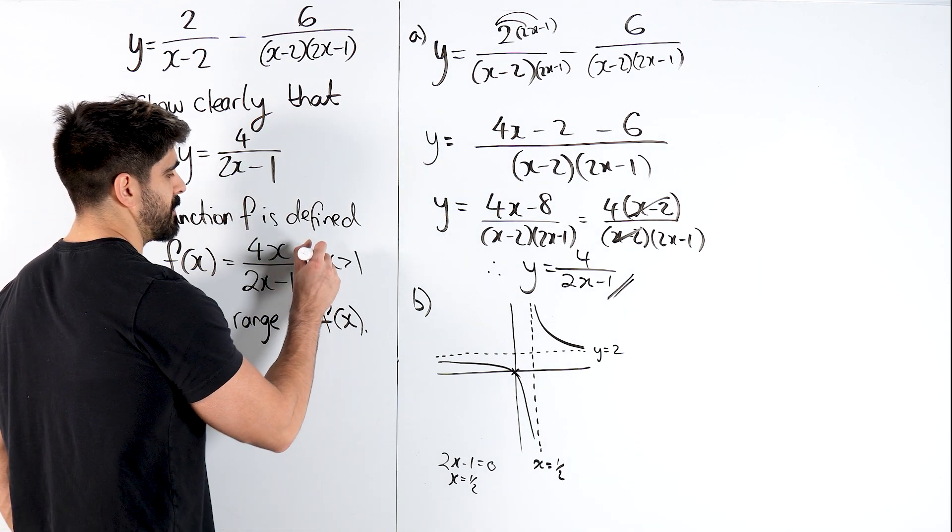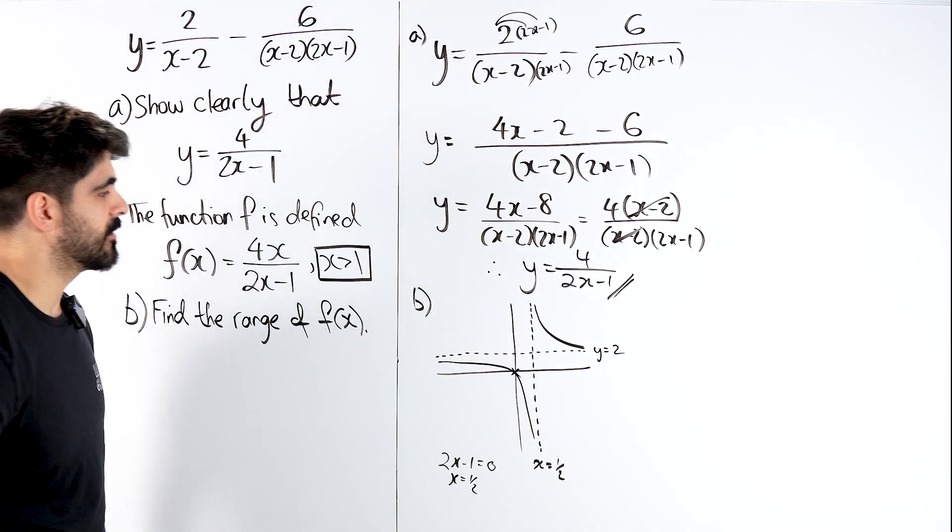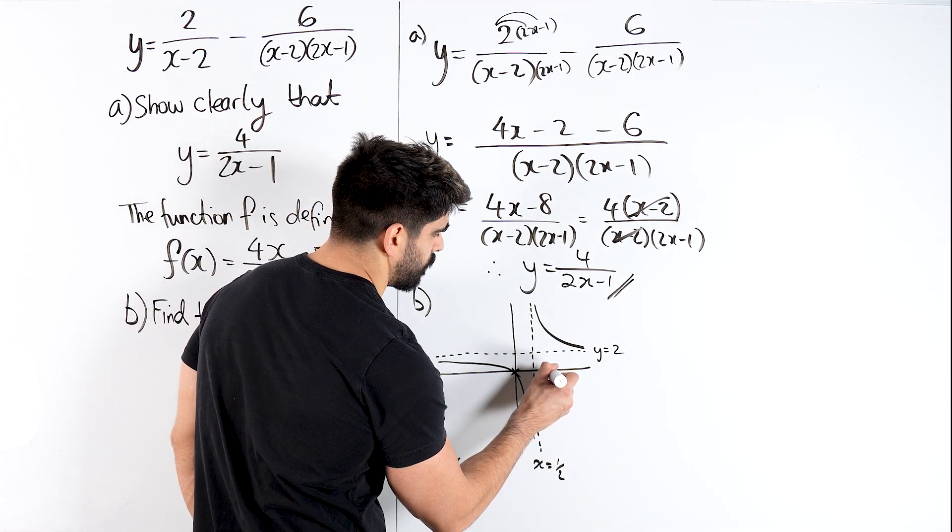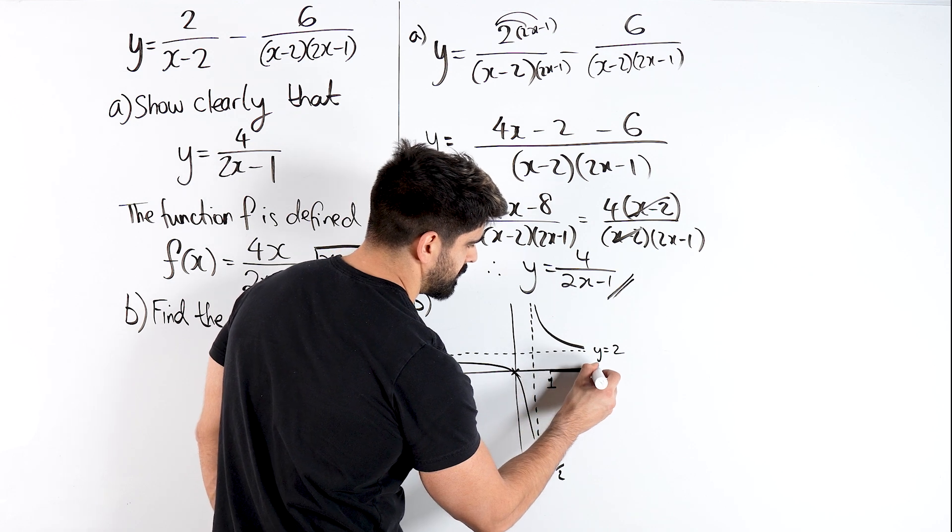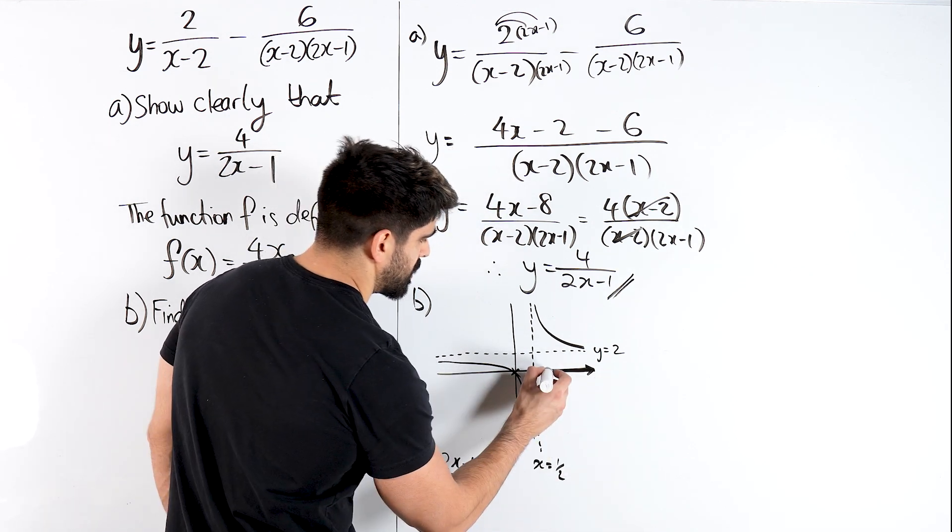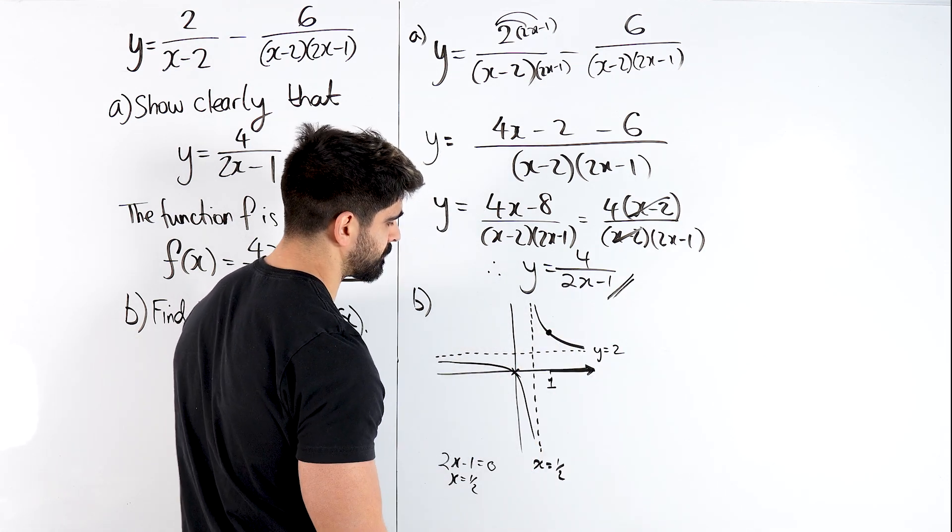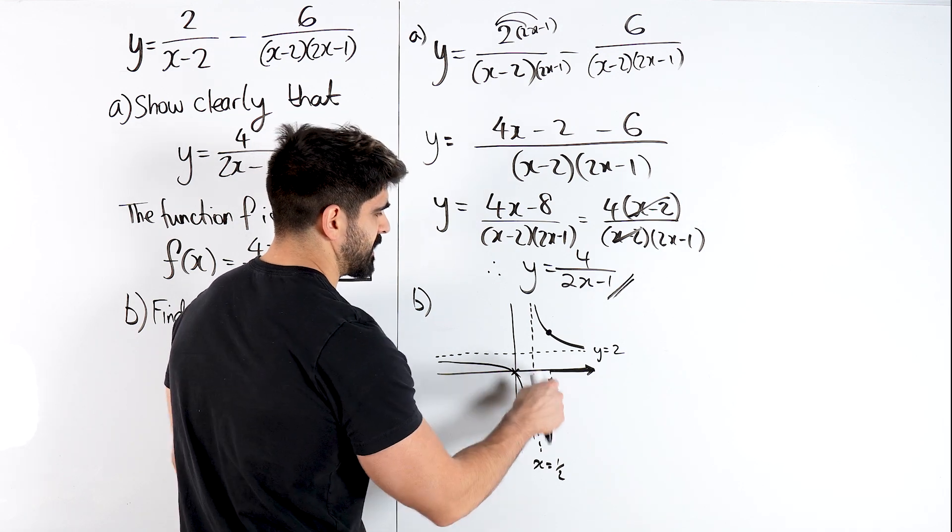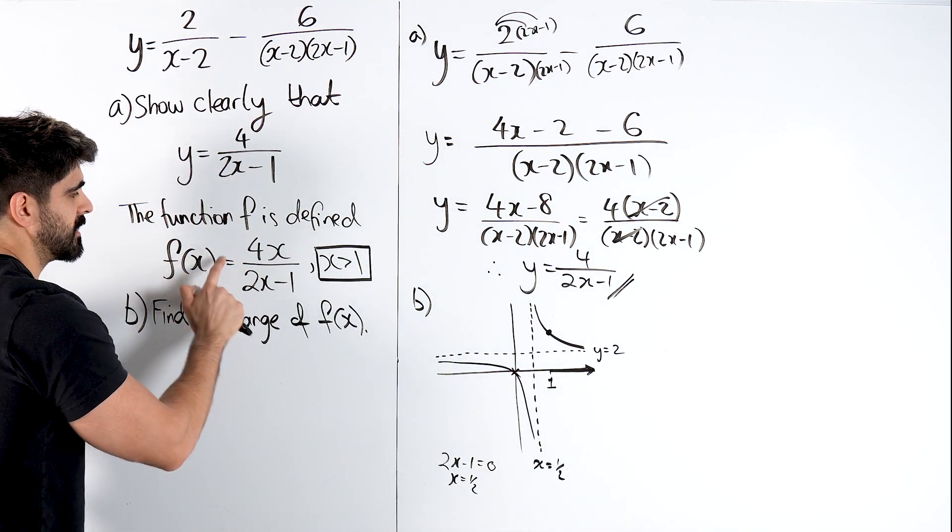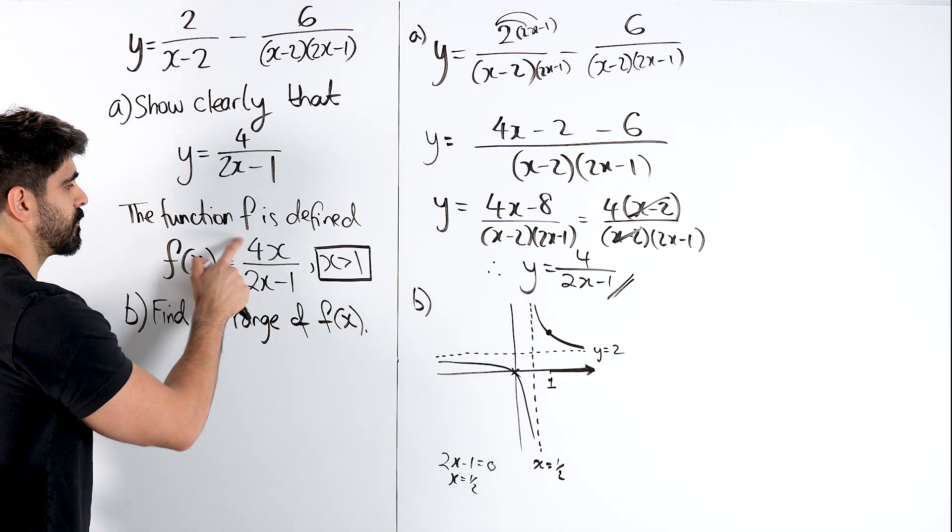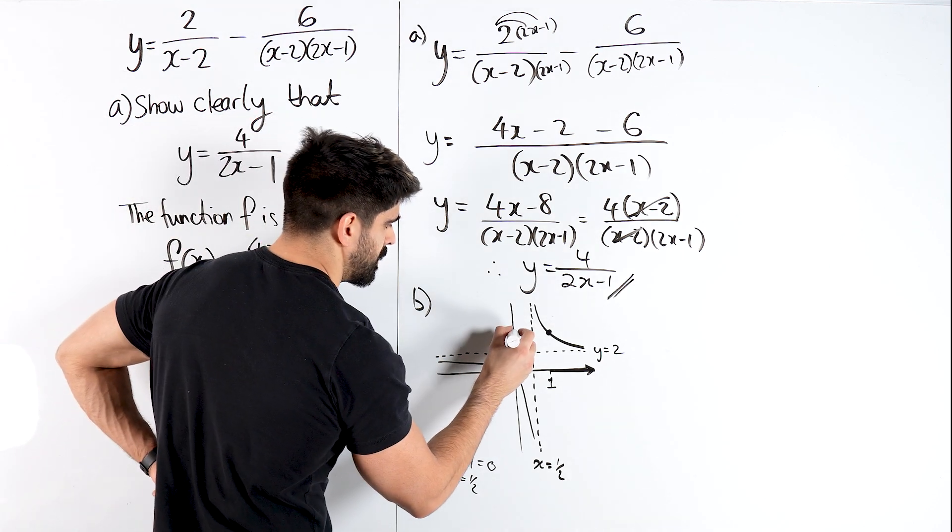Now we just need to go over to our domain being x is bigger than 1. Here's my asymptote of a half, 1 is going to be over here. So my graph is only defined for x values that way. It starts from here and it's only defined onwards. So we obviously need to sub in 1 - that's going to give me my y value. When you sub in 1 here, you're going to get 4 divided by 2 minus 1. 4 divided by 1, which is 4.